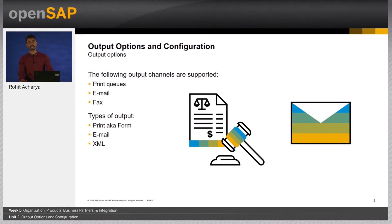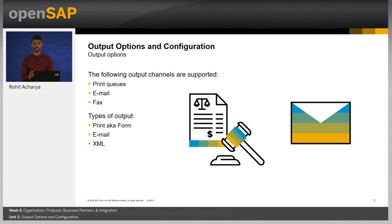In SAP Business by Design the generic term for output is defined as output management. It comprises of all activities related to the output of a business document in print, email, or fax format. Form-based output can be output on an ad hoc basis or as an integrated part of the business process itself. The following output channels are supported: print queues, email, and fax.